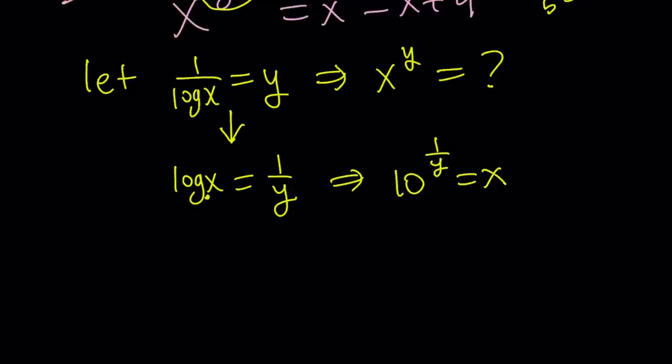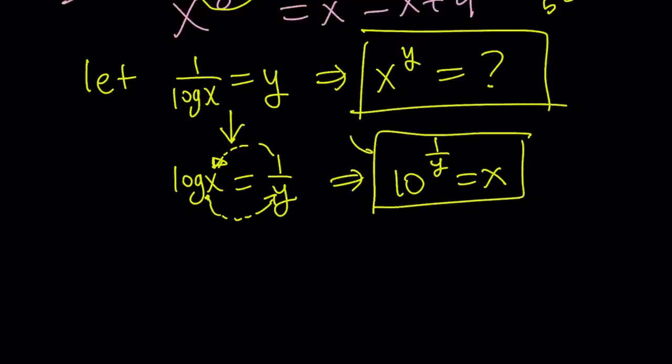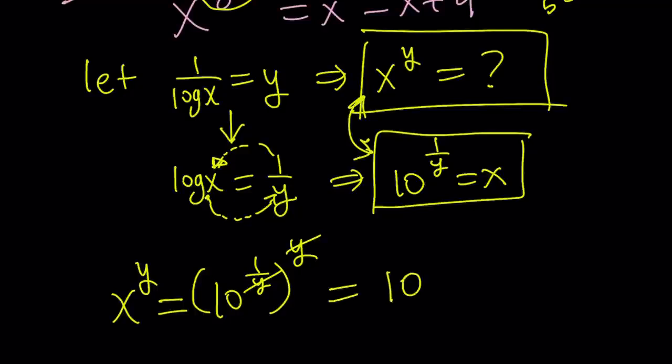By using the definition of logs, I can write it as 10 to the power 1 over y equals x. So, this is the base, this is the exponent, and this is the result. That's how logs work. Make sure you understand the definition of logarithms when you start studying logarithms. So, I was able to find x in terms of y. What am I going to do with that? Remember, I was trying to simplify x to the power y, and I have x in terms of y. So, we can go ahead and combine these two equations. Replace x with 10 to the power 1 over y in the first equation. So, x to the power y becomes 10 to the power 1 over y to the power y. And this becomes, because y cancels out, this becomes 10. So, what I was trying to simplify on the left-hand side just turned into a constant number, 10.